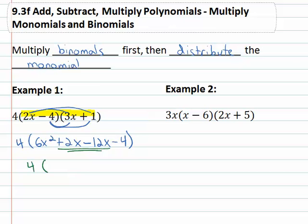So now we have 4 times—again write the 4 every step—6x² - 10x - 4. And now that we're done multiplying the binomials together, we can distribute that 4, the monomial, into the parenthesis. 4 times 6x² is 24x², 4 times negative 10x is negative 40x, and finally 4 times negative 4 is positive 16.